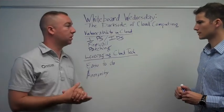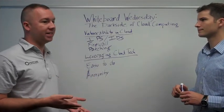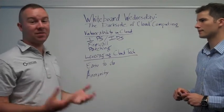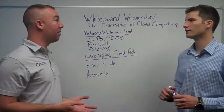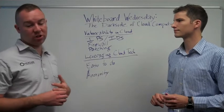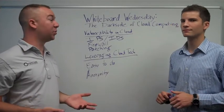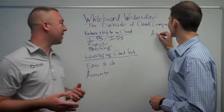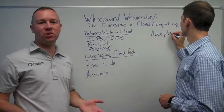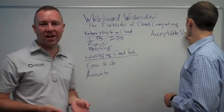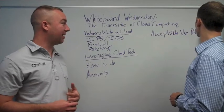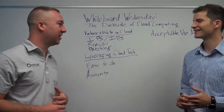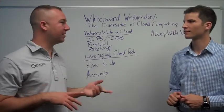Leveraging the cloud for hacking is completely outbound — somebody is initiating these attacks from their own boxes. In that case, an acceptable use policy would be what stops them. An acceptable use policy, or AUP, is an administrative control with the provider that says you're not allowed to do this particular activity — though we've seen people do it anyway.